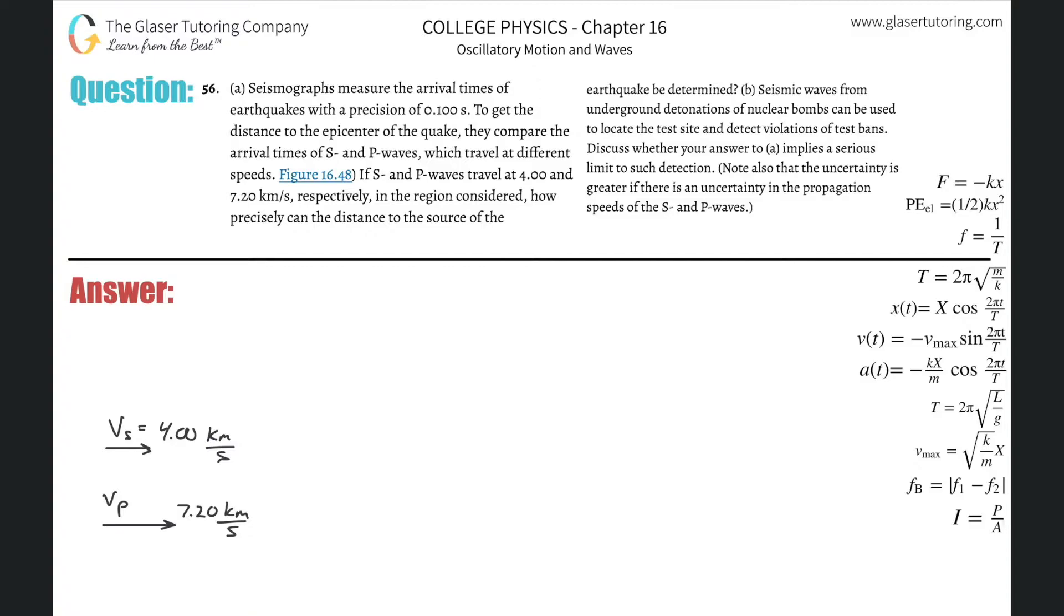Number 56, letter A. Seismographs measure the arrival times of earthquakes with a precision of 0.1 seconds. To get the distance to the epicenter of the quake, they compare arrival times of S and P waves. They travel at different speeds. S and P waves travel at 4 and 7.2 kilometers per second respectively in the region considered. How precisely can the distance to the source of the earthquake be determined?